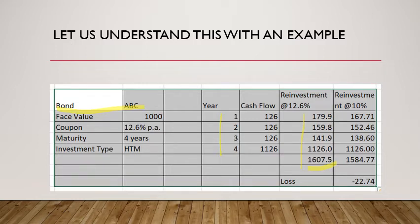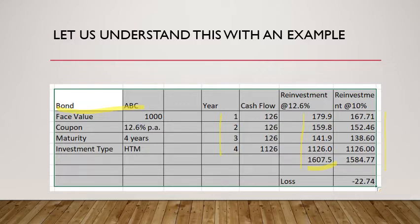Now, one important point: if the reinvestment rate falls to 10%, you receive a lower total maturity value of 1,584.77. The first coupon of 126 reinvested at 10% for three years becomes 167.71, and the second coupon of 126 reinvested at 10% for two years becomes 152.46. This difference in value represents the reinvestment risk — the interest rate risk that arises on the coupon payments — and this is what needs to be immunized.